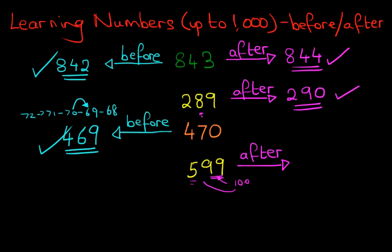After 99 is 100. So this 1 becomes added to the 5. So therefore it becomes 600. The number after 599 is 600.